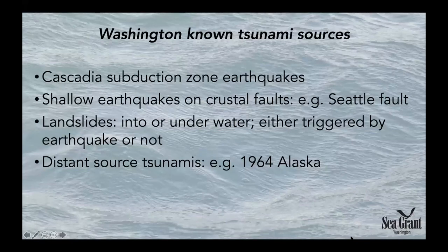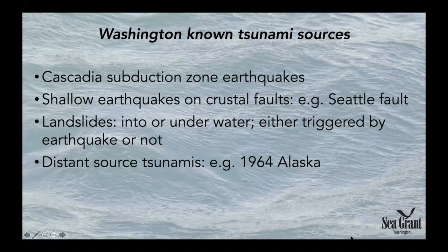In Washington, we know we have several different tsunami sources. These include tsunamis generated by Cascadia subduction zone earthquakes, tsunamis that form after earthquakes on crustal faults — an example of this is the Seattle fault — tsunamis formed by landslides either into or underwater, which can be triggered by earthquakes or happen without them. We also know we can get distant source tsunamis; an example is the 1964 Alaska earthquake tsunami, which made it all the way down the west coast of the U.S. and caused damage in many locations.